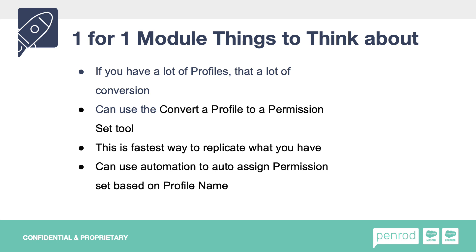You can always use automation to auto-assign permission sets based on a profile name. So if you have a flow and a profile named ABC and a permission set called ABC, you can use automation to say: if the profile is ABC, assign the ABC permission set automatically. You can use flows to do a lot of different cool things — one of them is creating and assigning permission sets based on a profile name, and we can automate that process.